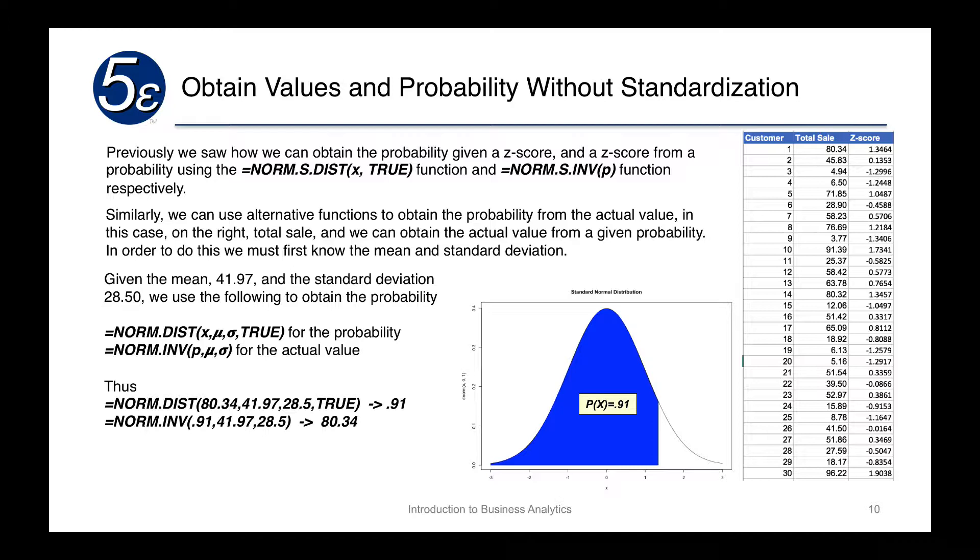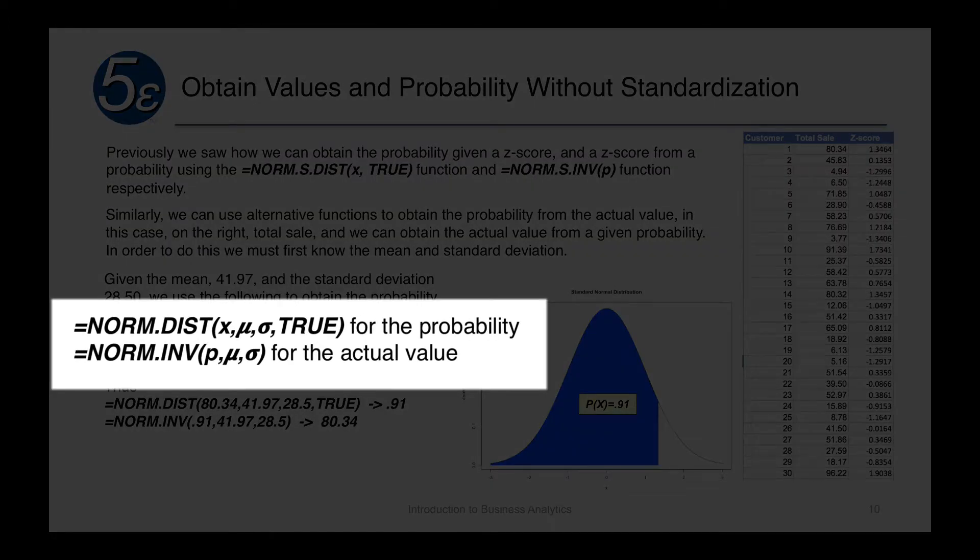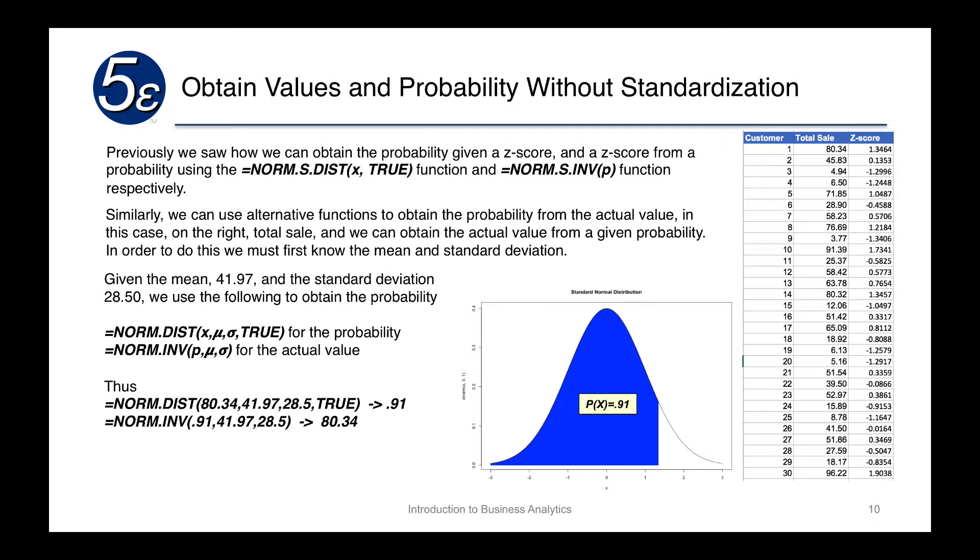We can use similar and alternative functions to obtain the probability from the actual value directly. The S in the Excel function stands for standardized. In the total sale to the right, we can obtain the actual value from a given probability. In order to do this, we must first know the mean and the standard deviation. Given the mean 41.97 and the standard deviation, to obtain the probability, we do NORM.DIST of x. We provide the x value (80.34), the mean (41.97), the standard deviation (28.5), and TRUE for the cumulative probability. That TRUE is going to say give us the cumulative probability. When it does that, it gives us 0.91. We can invert the procedure as well by using NORM.INV to actually get the 0.91% area under the curve, given a mean of 41.97 and a standard deviation of 28.5, and it will return 80.34.